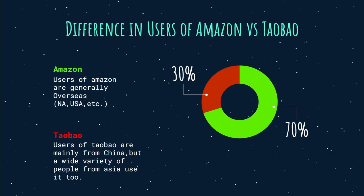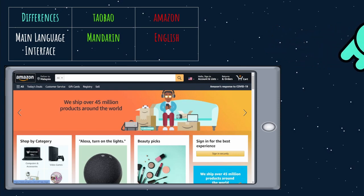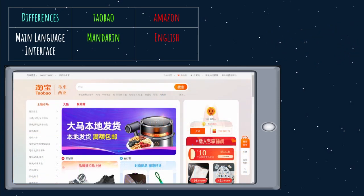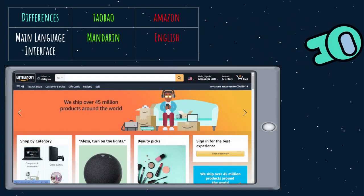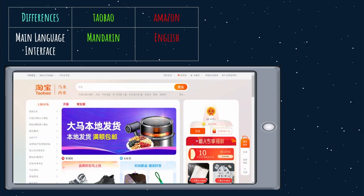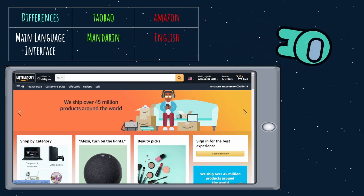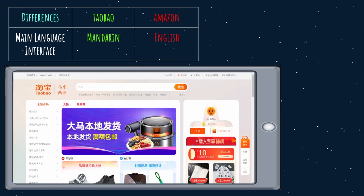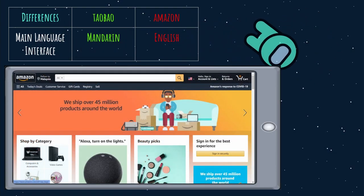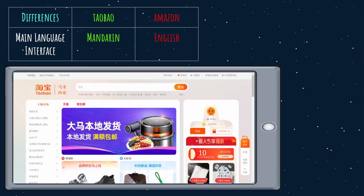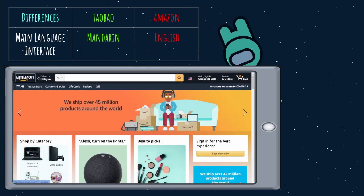Amazon and Taobao are two big online e-commerce websites dominating their respective countries. Language barrier comes into play when using these websites — Amazon uses English, the main language for most people, while Taobao uses Mandarin, understood primarily on the Asian side. Navigating and communicating with sellers would be difficult if you don't understand the respective language.